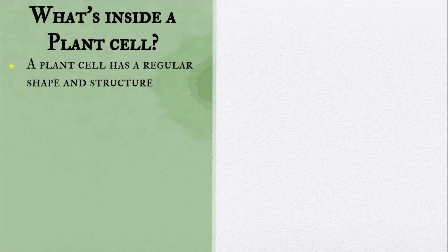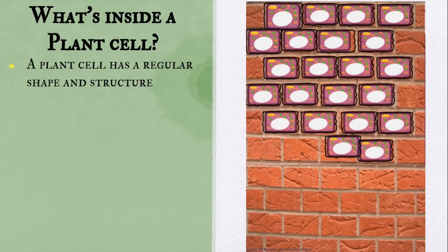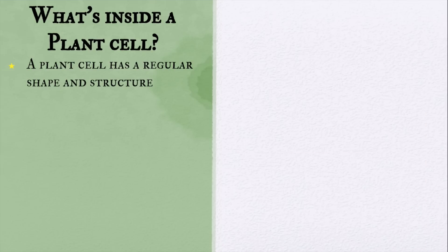Next, we are going to be learning about what's inside a plant cell. As you can see, a plant cell is very different from an animal cell. First of all, a plant cell has a regular shape and structure, unlike an animal cell which has an irregular structure. Because plant cells have a regular structure, they can be arranged like bricks.